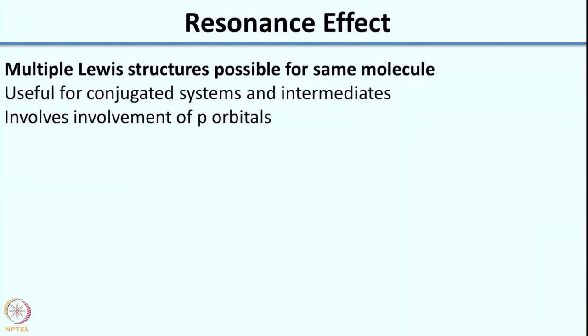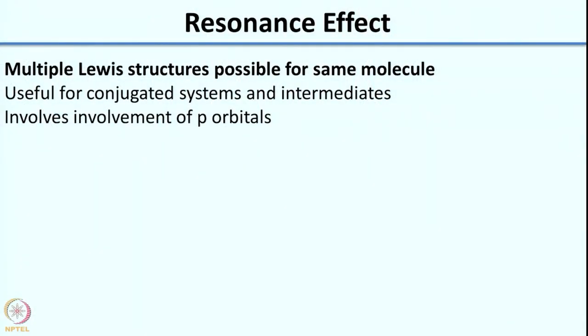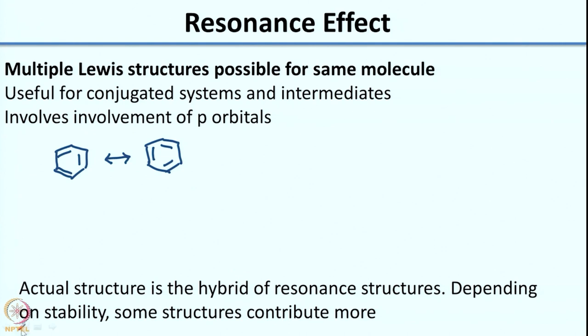Now that we have some idea of the inductive effect, let us look at another effect where lone pairs play a very important role — the resonance effect. Resonance effect is where you have multiple Lewis structures for the same compound, which you must have seen in your books. A classic example is benzene, where you have two resonance structures shown with a double-headed arrow, and the actual structure is the hybrid of both. These are very useful for conjugated systems.